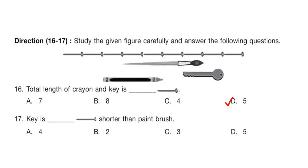Question 17: The key is how many pins shorter than the paintbrush? The key is 2 pins long and the paintbrush is 4 pins. So option B, 2, is the correct answer.